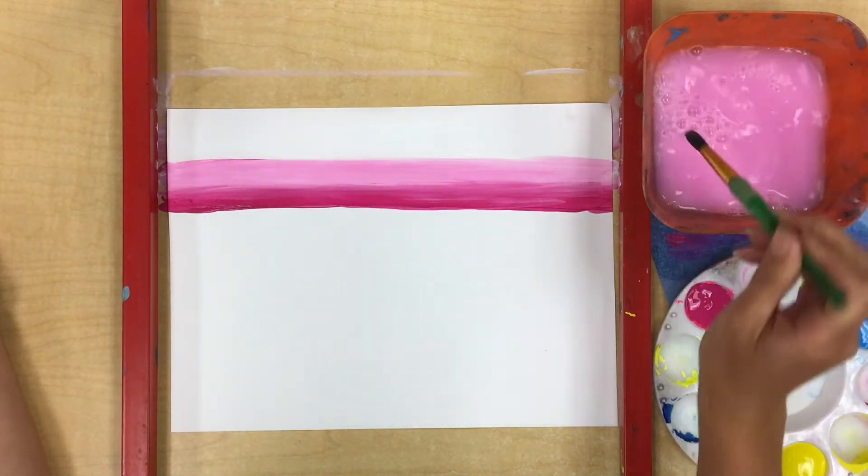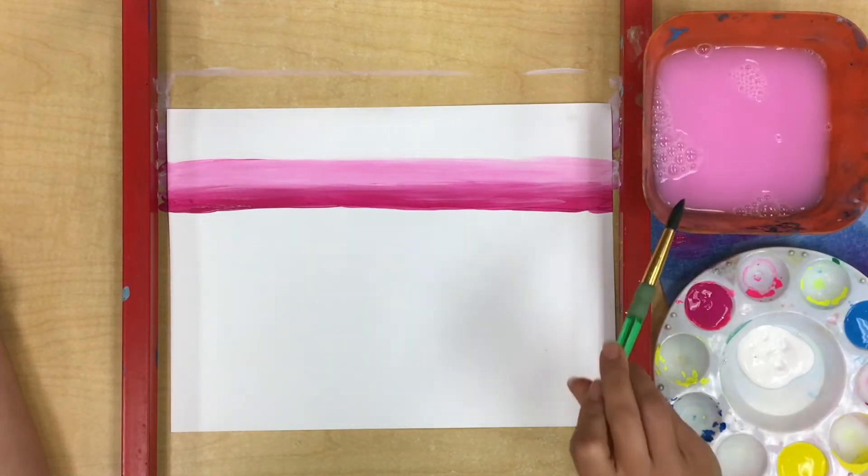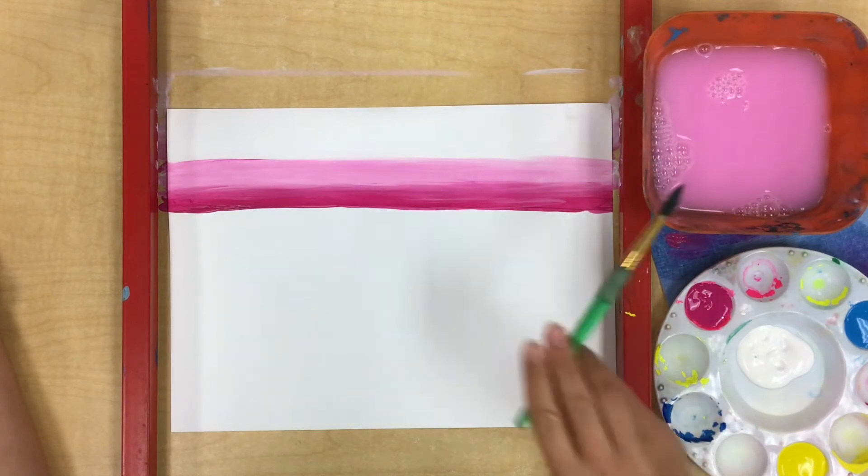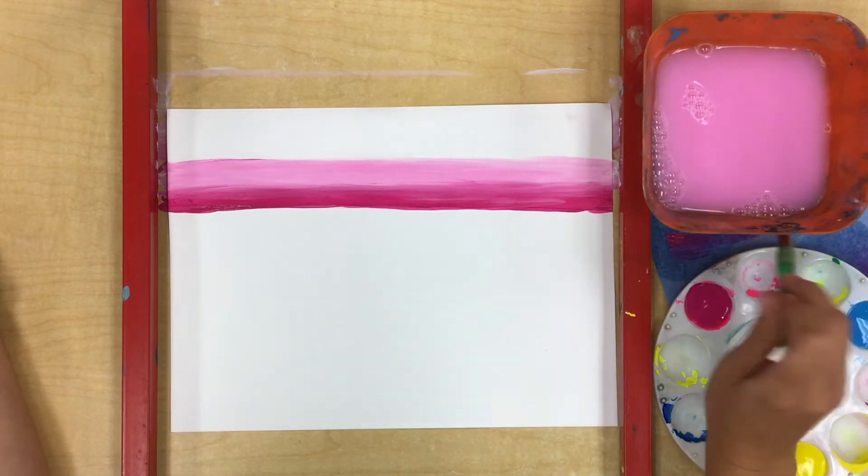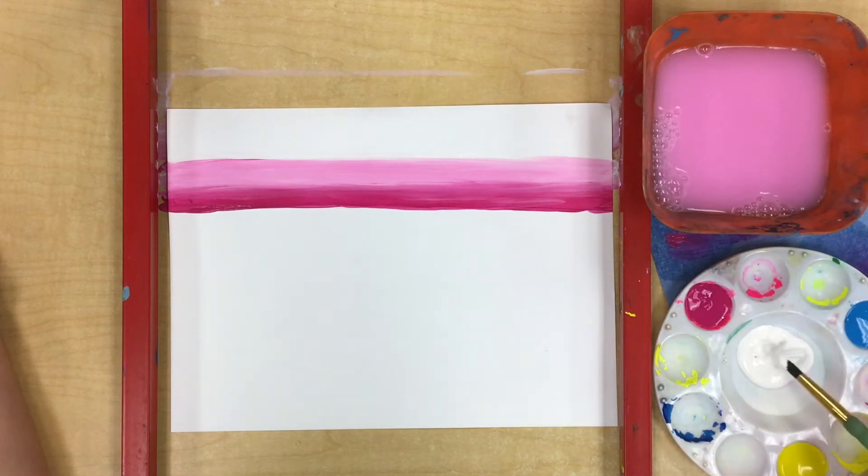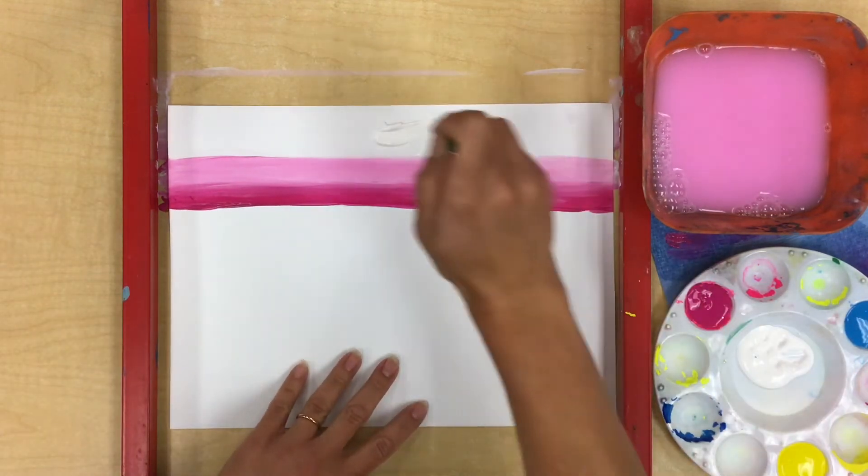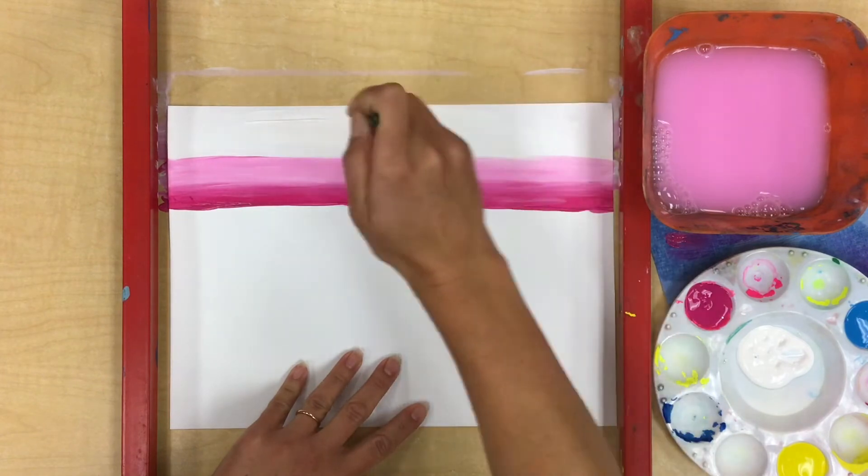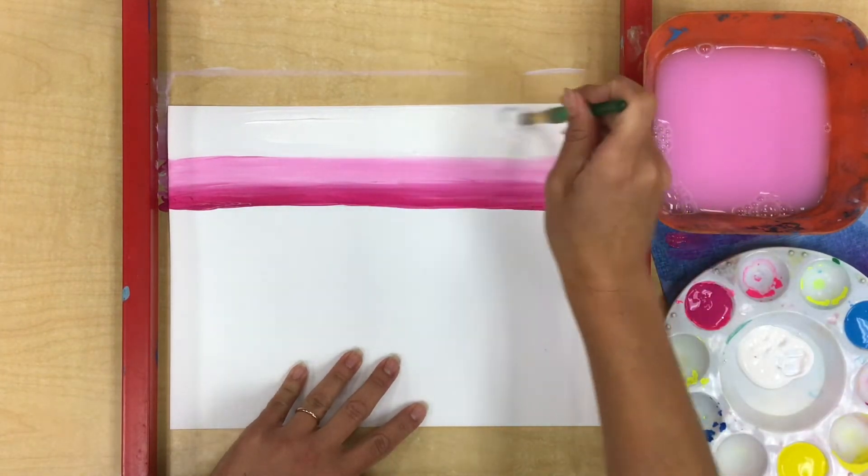I'm going to clean my brush really well. Wipe it on the edge, not tapping it that could spill your water bucket, just wiping it, drying it on the towel and once again I'm going to get a whole bunch of white. I'm going to fill in the whole rest of my page with those soft smooth brush strokes.